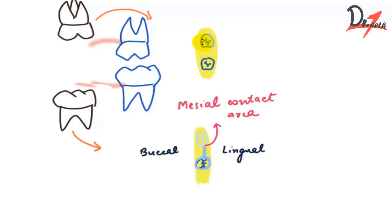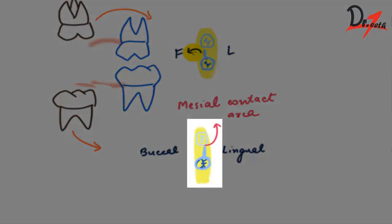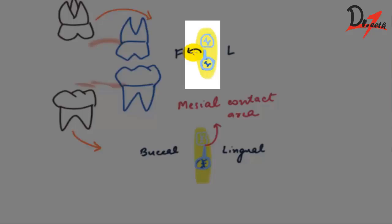These considerations are important in preventing the erupting permanent molar from slipping contact with the appliance. In the lower arch, the contact area should have a slight lingual position, and in the maxillary appliance, it should be slightly facial to the crest of the alveolar ridge.